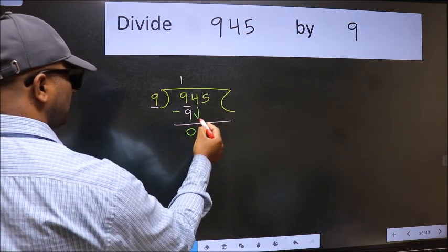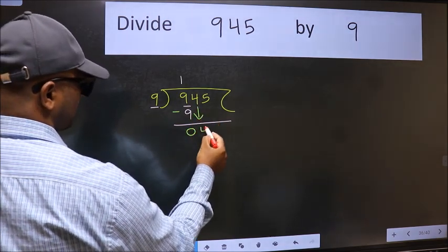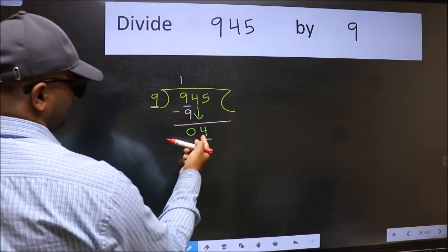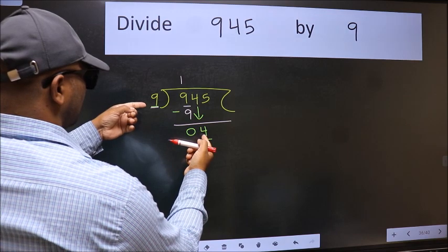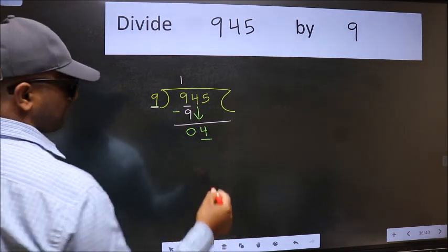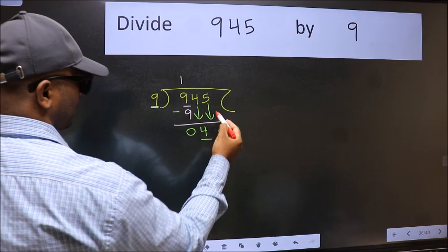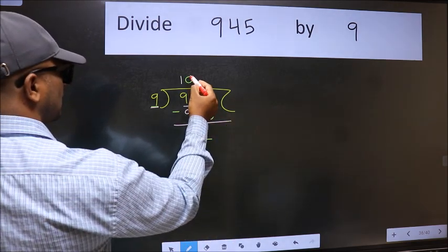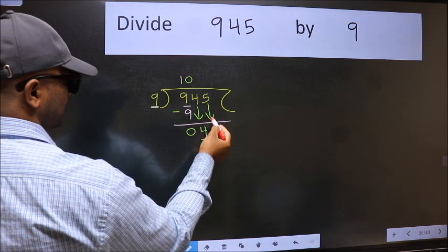After this, bring down the next number, so 4 down. Now here we have 4 and here 9. 4 is smaller than 9, so we should bring down the second number. The rule to bring down the second number is we should put 0 here. Then only we can bring this number down.